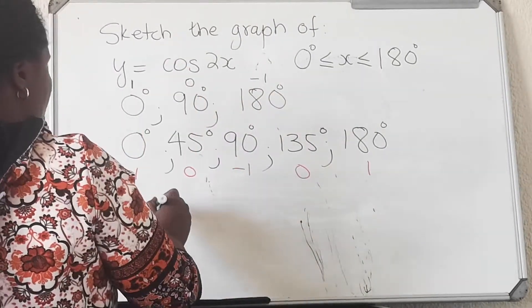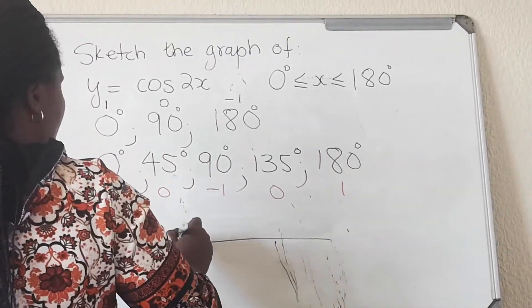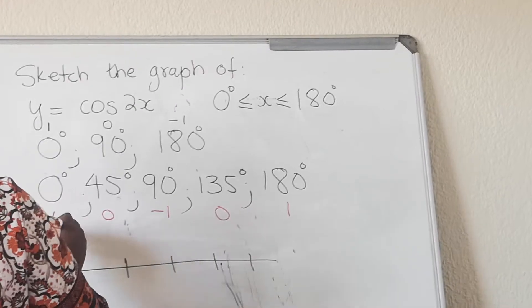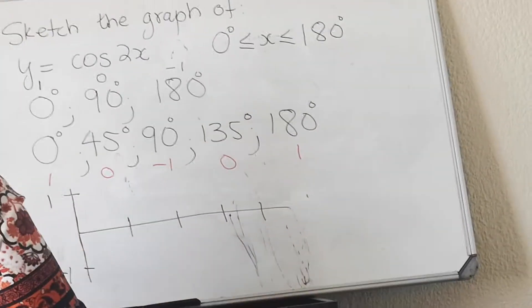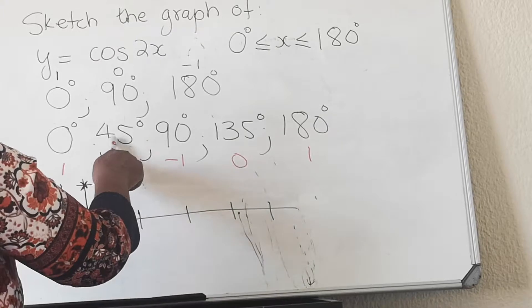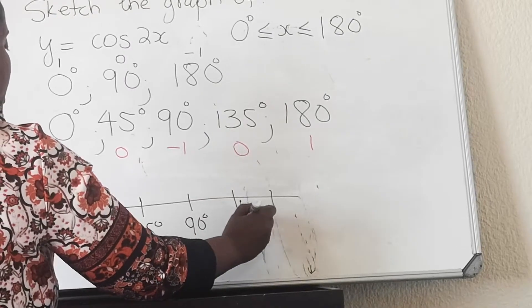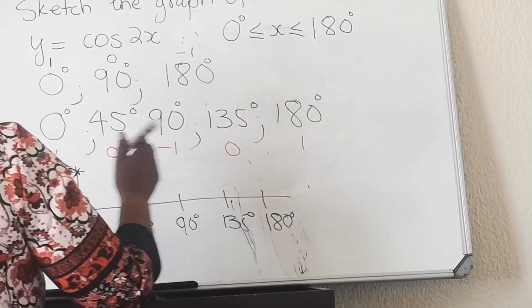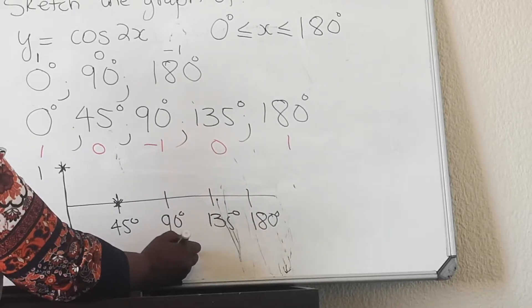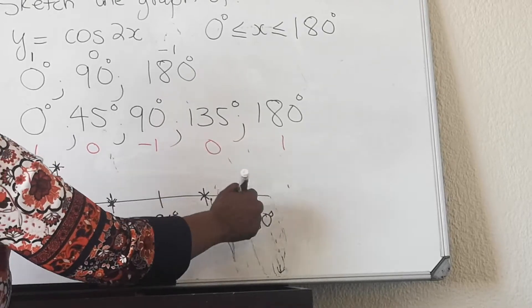Our restriction starts at zero, so we have no x-values less than zero. The coordinates to plot are: (0°, 1), (45°, 0), (90°, -1), (135°, 0), and (180°, 1). You plot these points and join them to form the cosine curve.